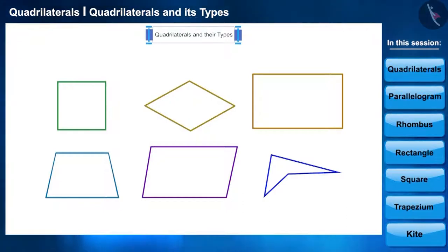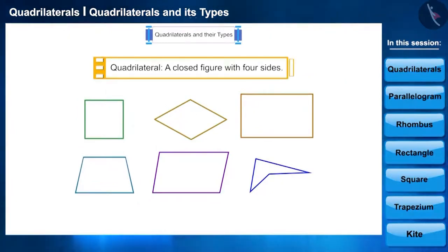Yes, you can see that all these figures have four sides. In the previous year we learned that such shapes are called quadrilaterals.